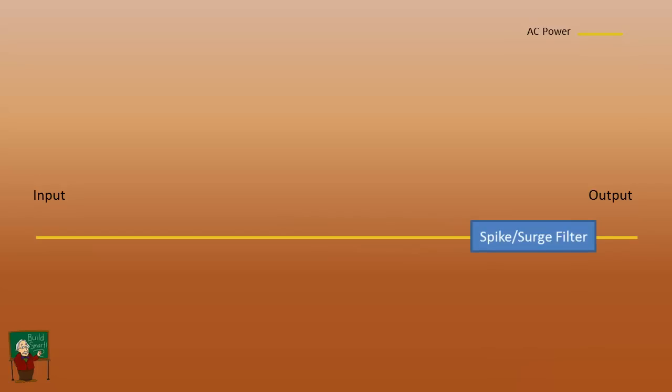Now we'll take the surge filter and move it to the end and take a look at a standby UPS. This is sort of the lowest level of the UPS and basically provides a battery backup.